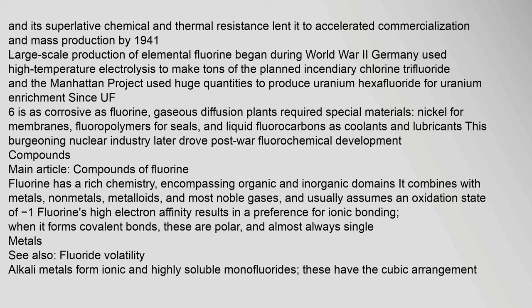By 1941, large-scale production of elemental fluorine began during World War II. Germany used high-temperature electrolysis to make tons of the planned incendiary chlorine trifluoride. The Manhattan Project used huge quantities to produce uranium hexafluoride (UF₆) for uranium enrichment. Since UF₆ is as corrosive as fluorine, gaseous diffusion plants required special materials: nickel for membranes, fluoropolymers for seals, and liquid fluorocarbons as coolants and lubricants. This burgeoning nuclear industry later drove post-war fluorochemical development.